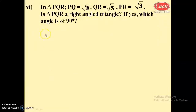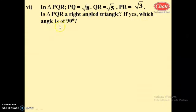Welcome back dear students. We are going to start question number six from the problem set. Question number six: in triangle PQR, PQ equals root 8, QR equals root 5, PR equals root 3. Is triangle PQR a right angle triangle? If yes, which angle is 90 degrees? Solution: